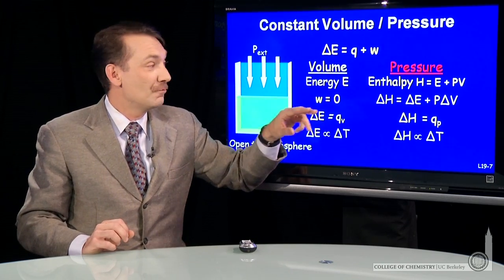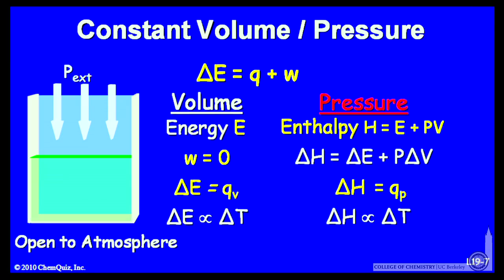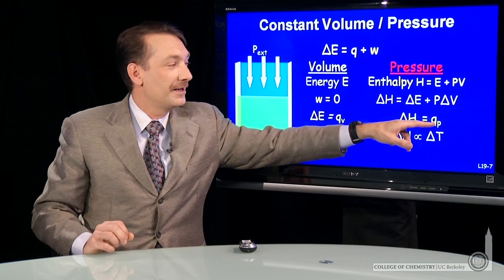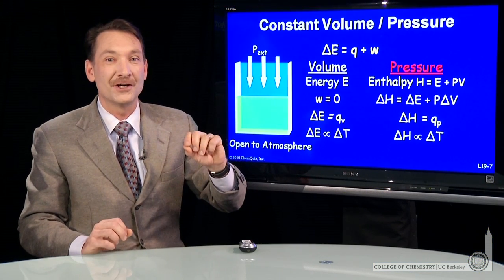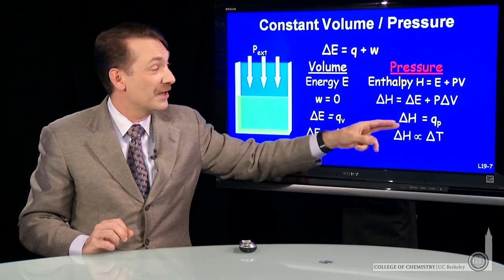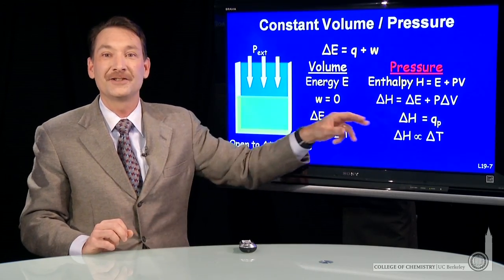The change in enthalpy will be the change in energy plus P delta V. And you can do some mathematics to show that the enthalpy change is equal to the constant pressure heat change. So the heat under constant pressure is also a state function that we call the enthalpy change, delta H.